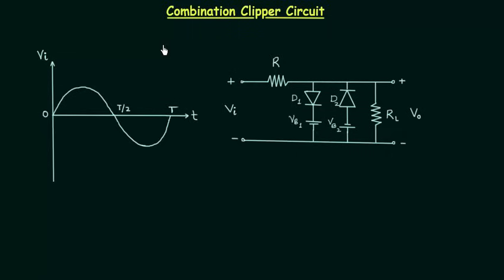In the last few lectures we have completed series and parallel clipper circuits. Now I will explain the working of combination clipper circuit. A combination clipper circuit is a combination of the biased positive clipper and biased negative clipper.